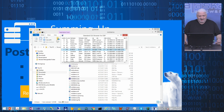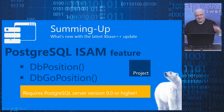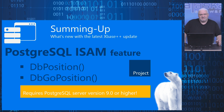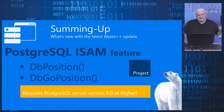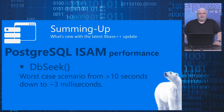Unfortunately, with the ISAM emulation and the positional interface, there is an additional prerequisite that was not required with earlier PostgreSQL ISAM support: we now need PostgreSQL server version 9 or higher. This is because only version 9 of the PostgreSQL server has specific optimization strategies in place to provide proper performance for the DBPosition and DBGoPosition capabilities.